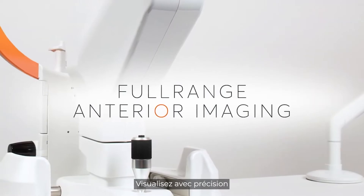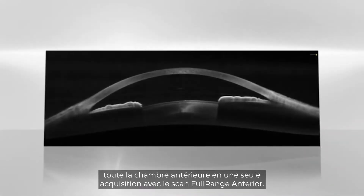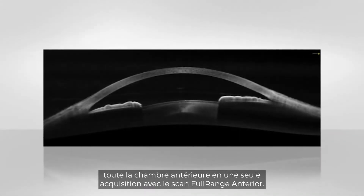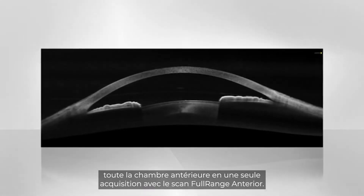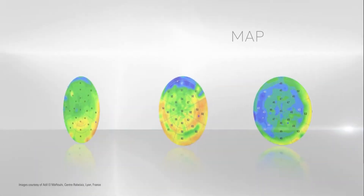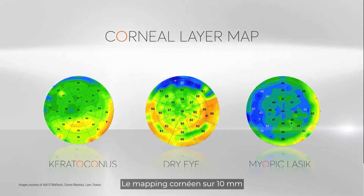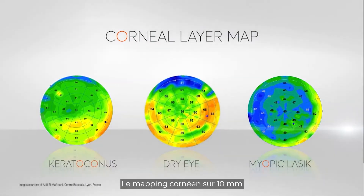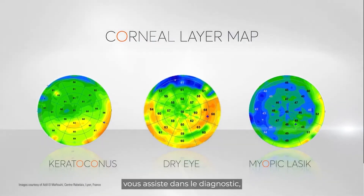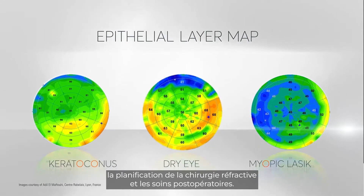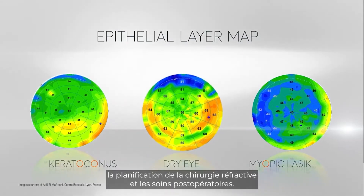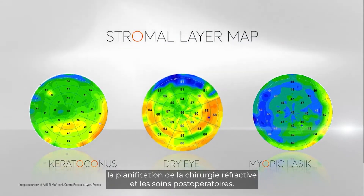Full range anterior imaging captures stunning views of the entire anterior chamber in a single scan. The 10mm corneal layer map aids in disease diagnosis, refractive surgery planning, and post-op management.